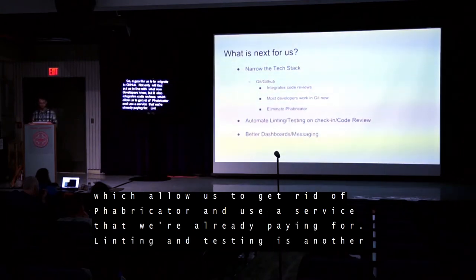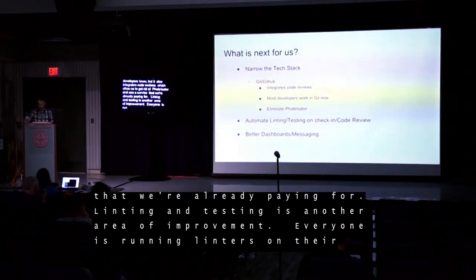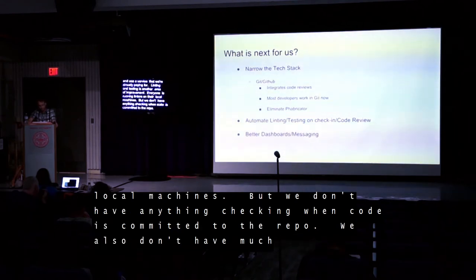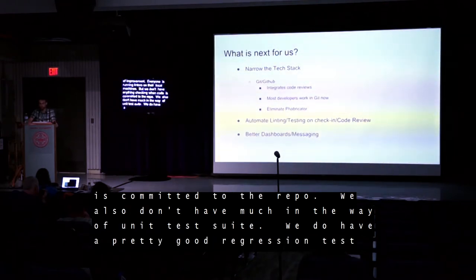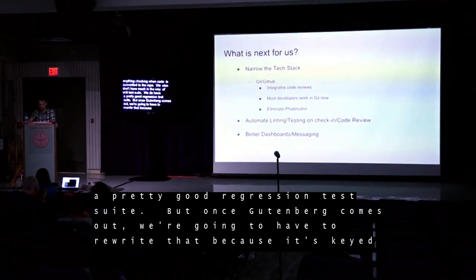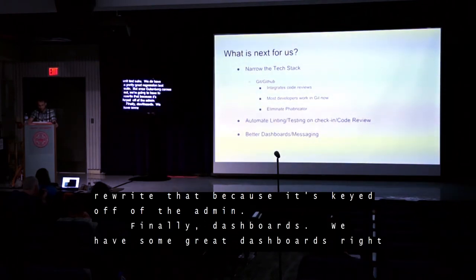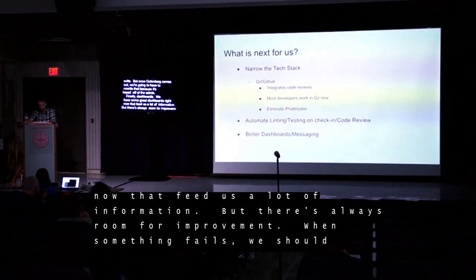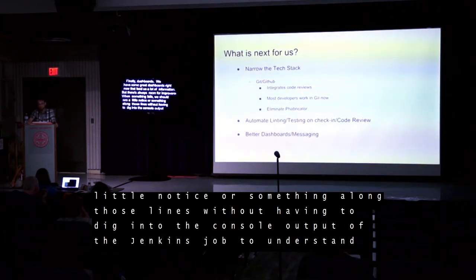Linting and testing is another area of improvement. Everyone is running linters on their local machines, but we don't have anything checking when code is committed to the repo. We also don't have much in the way of a unit test suite. We do have a pretty good regression test suite, but once Gutenberg comes out we're going to have to rewrite that because it's keyed off of the admin. Finally, dashboards — there's always room for improvement. When something fails, we should see a clear notice without having to dig into the console output of a Jenkins job.